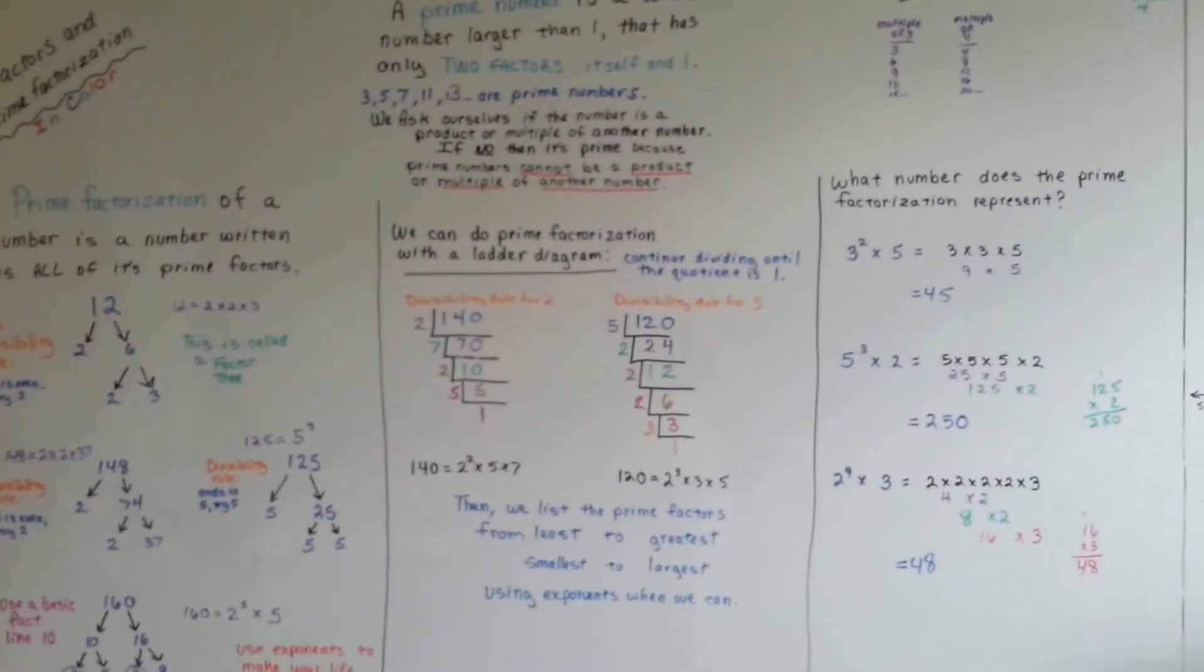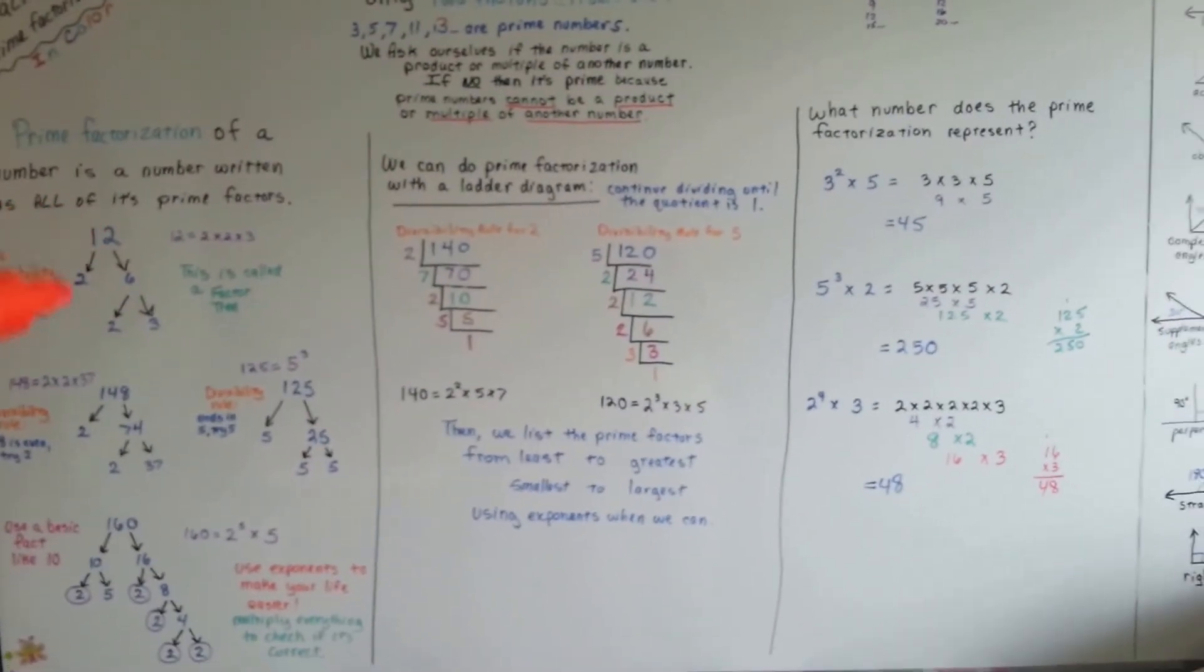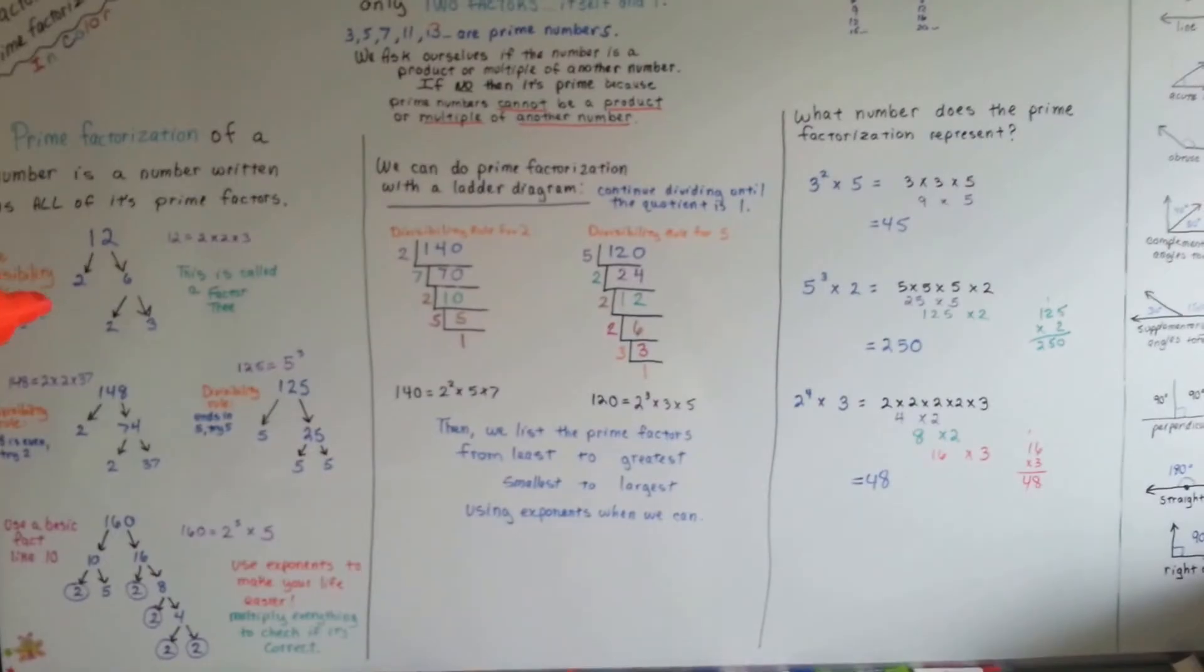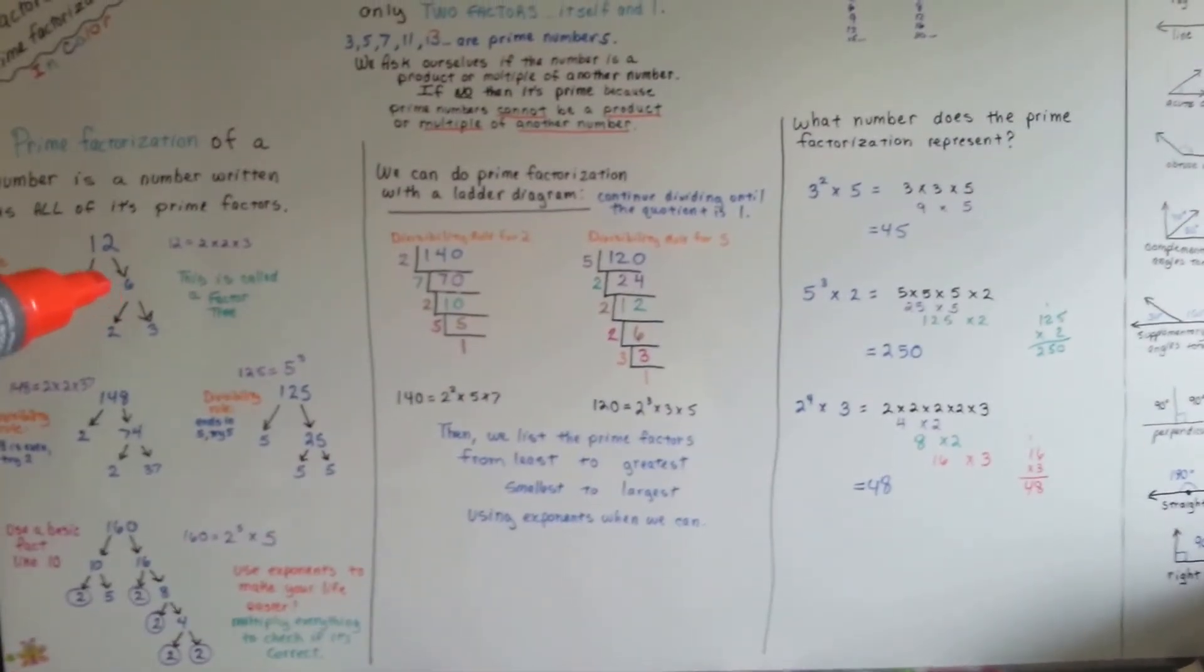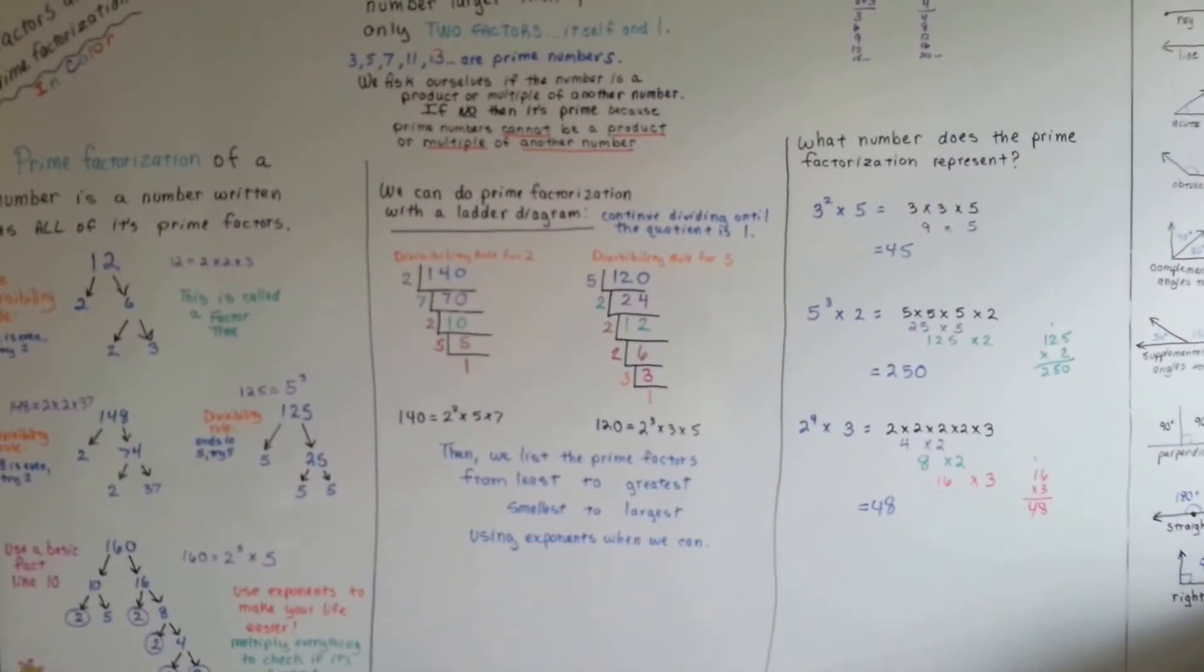And as you're doing your prime factorization, just ask yourself, what times what equals that number? And then write those 2 factors. And say, what times what equals that number? And write those 2 factors, and keep going until you can't go anymore.